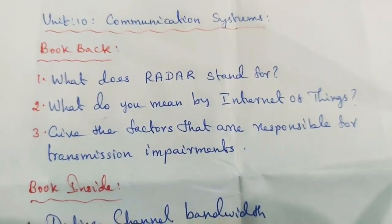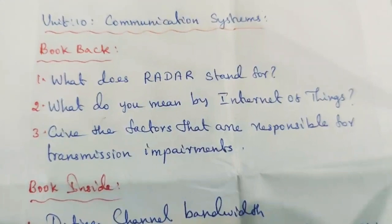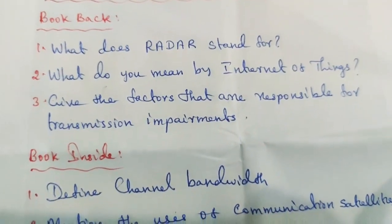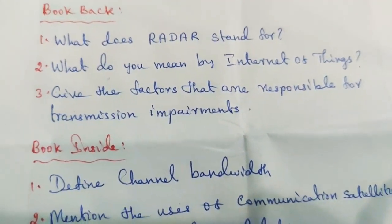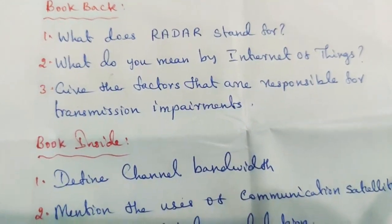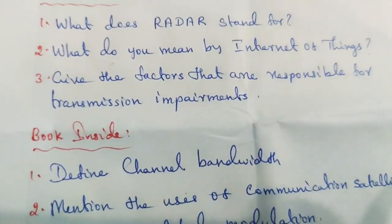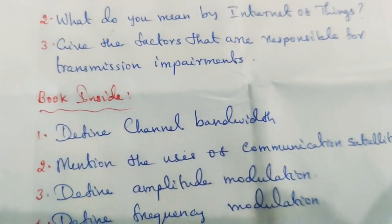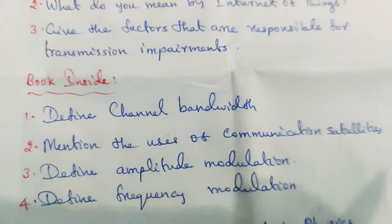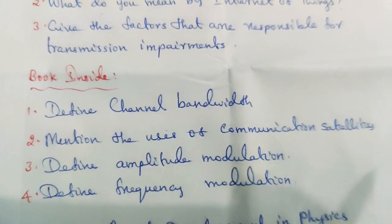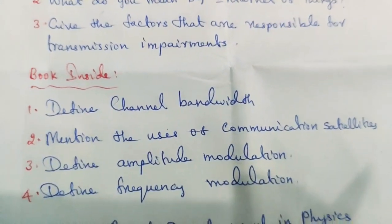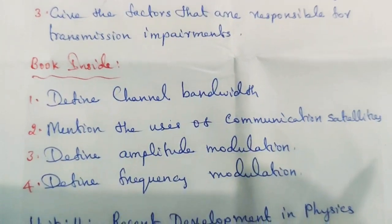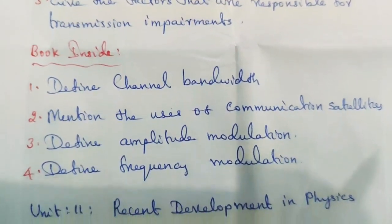Unit 10: Communication Systems. Book back questions: What does RADAR stand for? What do you mean by Internet of Things? Give the factors responsible for transmission impairments. Book inside: Define channel bandwidth. Mention the uses of communication satellites. Define amplitude modulation. Define frequency modulation.